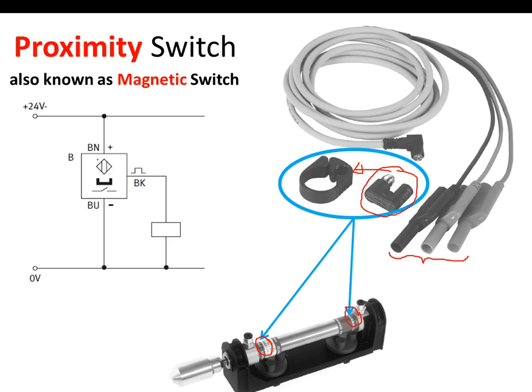We need to remember that for the proximity switch we have positive terminal, ground, and signal terminal. And this is the most important. This is where the signal is going to be sent to the relay.